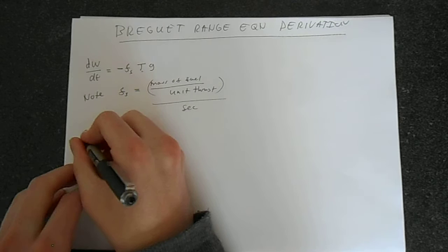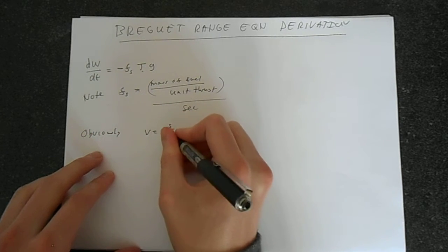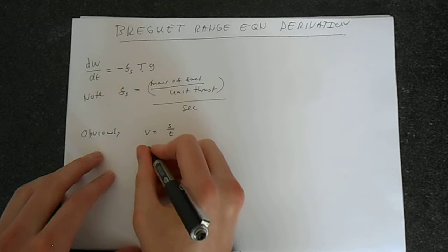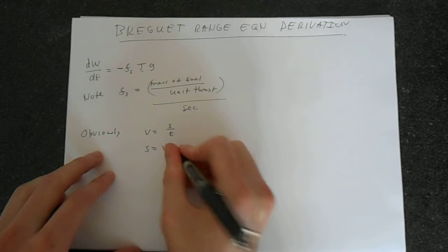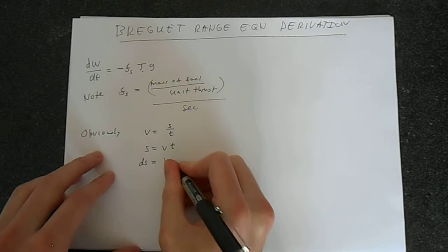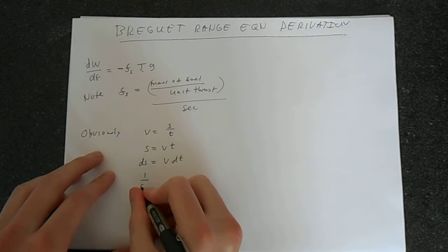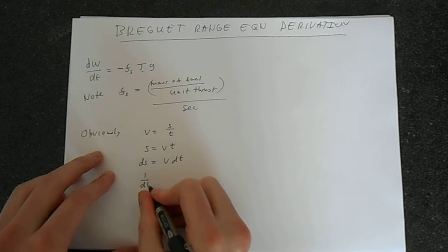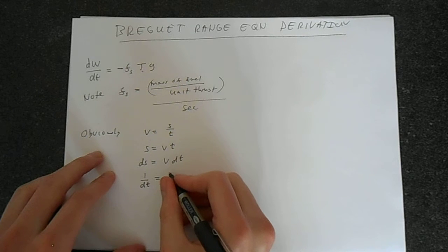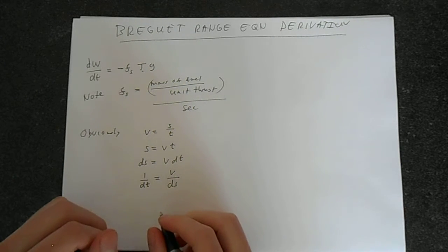Let's start with some other stuff we know. We can say that obviously speed equals displacement divided by time. Rearranging this as you should very easily be able to do, we derive this and get expression dS equals v dt. Rearranging this into a more useful form, we've got this 1 over dt here. We can say this 1 over dt is equal to v over dS. We can make a nice substitution.